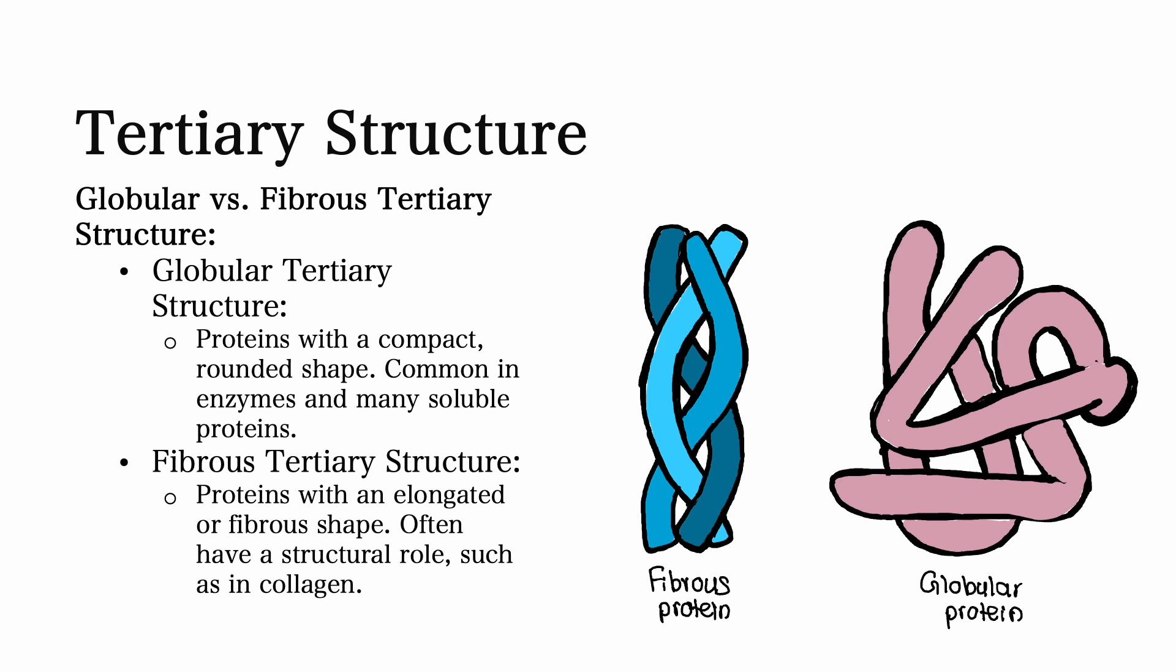Fibrous tertiary structures refer to proteins with elongated or fibrous-looking shapes. These types of proteins often have a structural role. For example, collagen is a protein that has a fibrous tertiary structure.